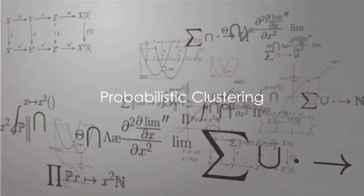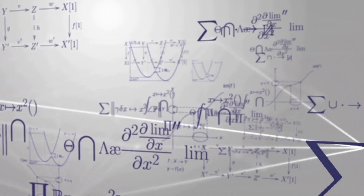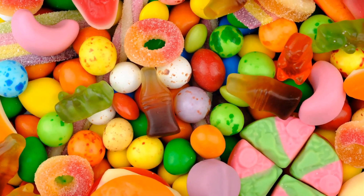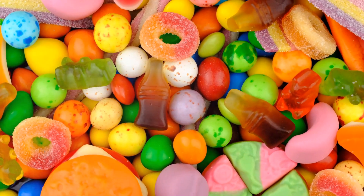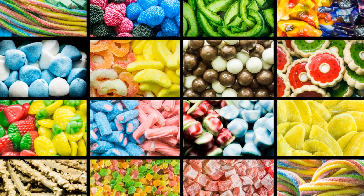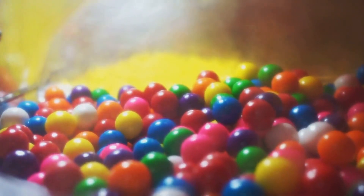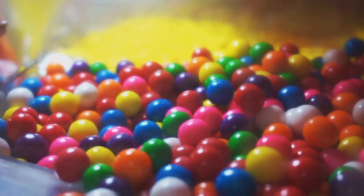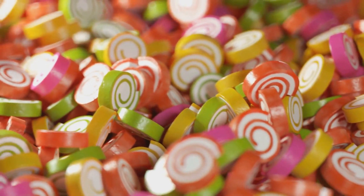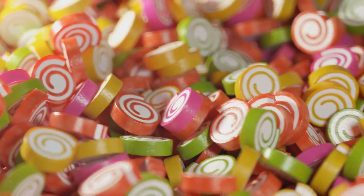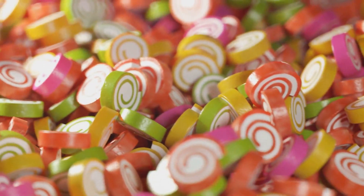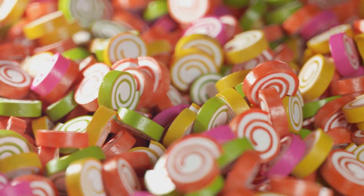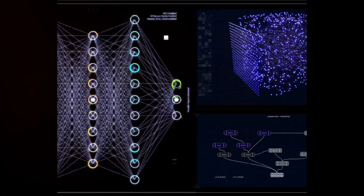On the other hand, probabilistic clustering models the data using a probabilistic framework. It assumes that the data points are generated from a mixture of underlying probability distributions, and each cluster corresponds to one of these distributions. Think of a bag of multicolored candies — each color candy is a different flavor, and you can expect a certain number of each color in the bag. That's the underlying distribution. The colors are the clusters, and the flavor is the property that links all candies of a particular color together.